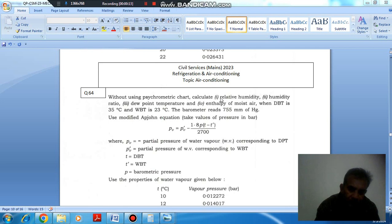Without using psychrometric chart, calculate: 1. Relative humidity, 2. Humidity ratio, 3. Dew point temperature, 4.